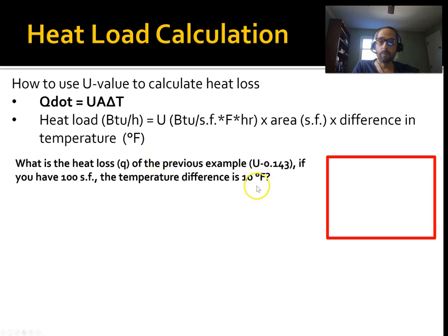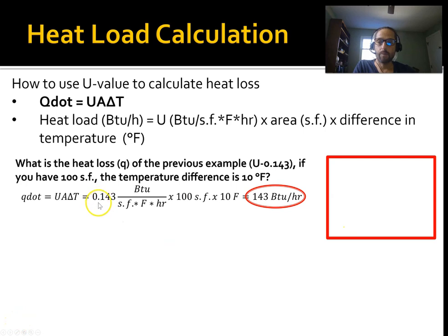What's the heat loss if we have that same surface? Remember, it's R-7 or U of 0.143. If I have 100 square feet of it, and the temperature difference on either side of that surface is 10 degrees Fahrenheit. So you're just going to apply this formula. We get UA delta T. 0.143 is our U. Our A is 100 square feet. And then we get 10 degrees Fahrenheit. That gives us 143 BTUs per hour. Really easy.